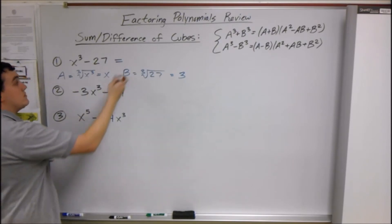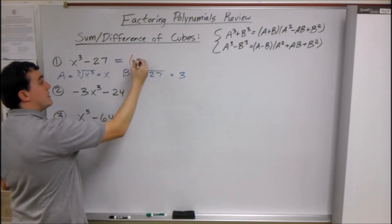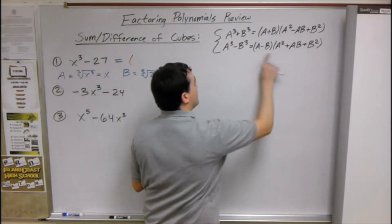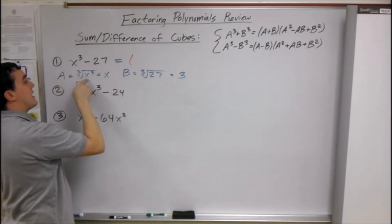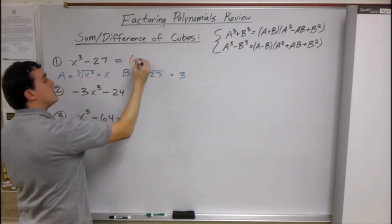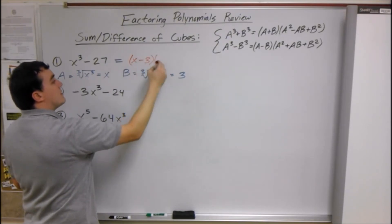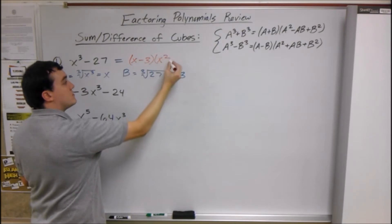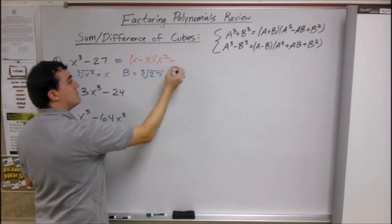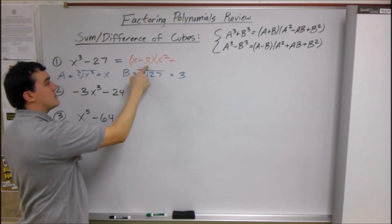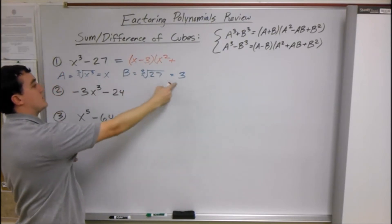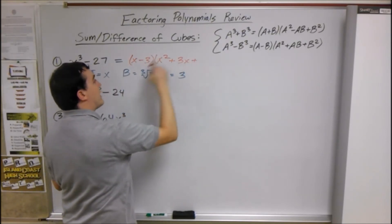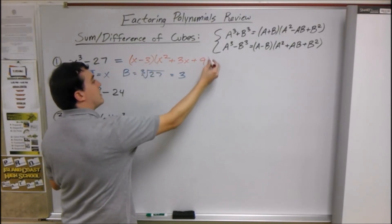So for number 1, using the difference of cubes formula: a minus b gives us (x - 3). Then a² is x², the opposite sign gives us plus, a times b is x times 3 = 3x, and the square of the last term is 3² = 9. So we get (x - 3)(x² + 3x + 9).